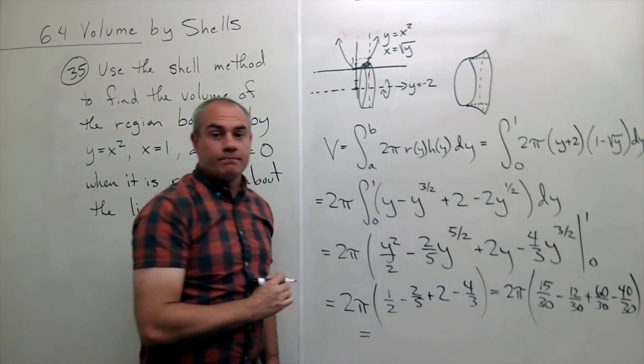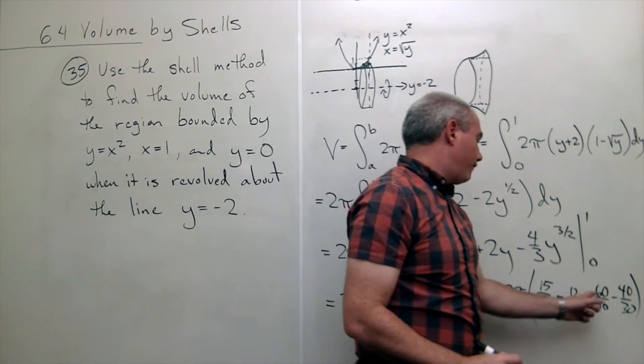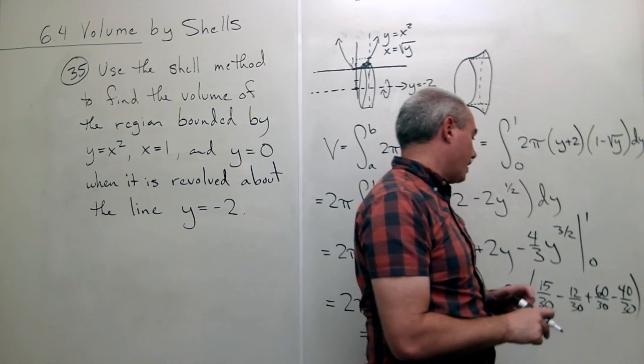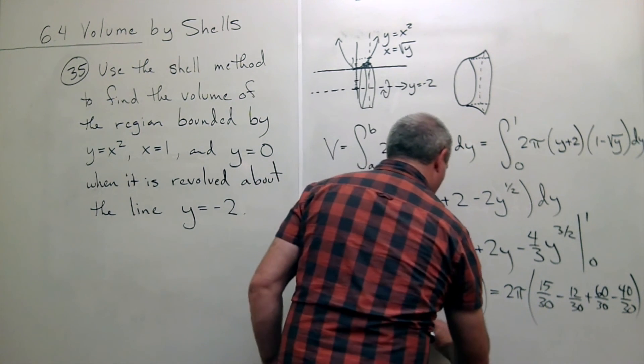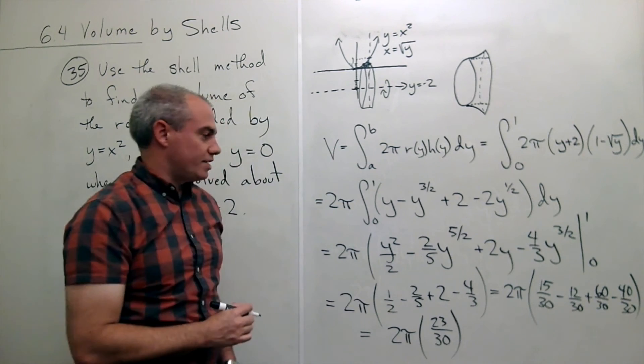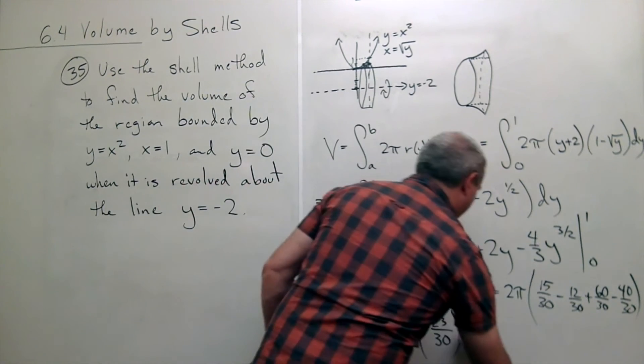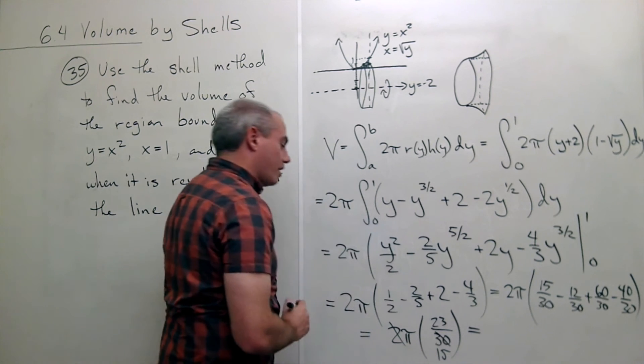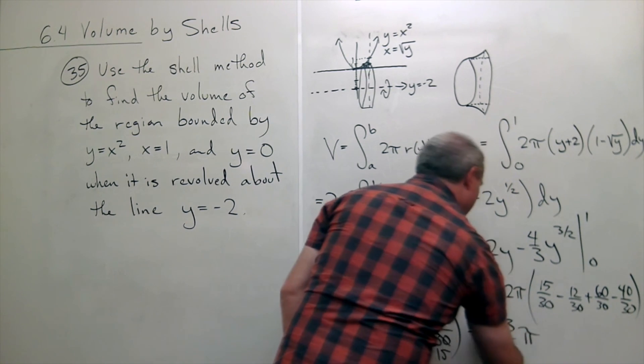Let's combine it all together. I get two pi times, what do we got? Forty minus thirty is twenty, plus fifteen is thirty-five, minus twelve would be twenty-three. So this is twenty-three over thirty. Then the two and the thirty can cancel and give me a fifteen on the bottom, which means I'd get twenty-three over fifteen pi for my answer.